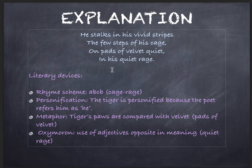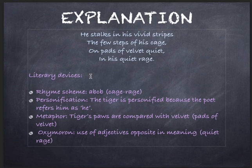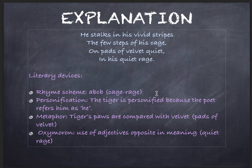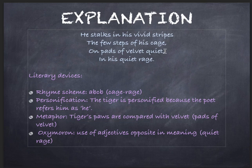Now we will quickly look at the literary devices. First of all, the rhyme scheme of the entire poem stanza-wise. The rhyme scheme is decided on the basis of the last word of each line. As you can see, the first line ends with 'stripes', second line 'cage', third line 'quiet', and fourth line 'rage'. Here, 'stripes' is rhyming with 'quiet', and 'cage' is rhyming with 'rage'.